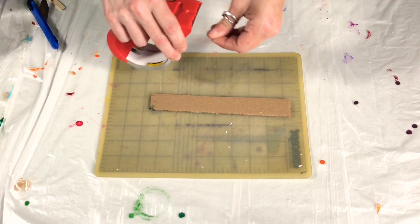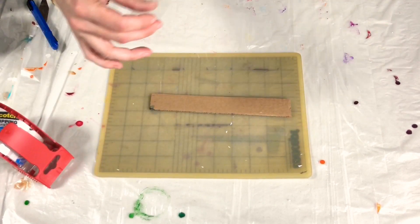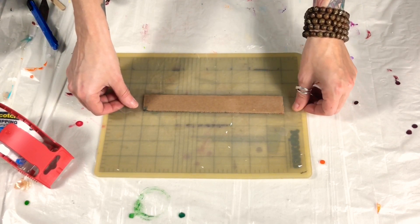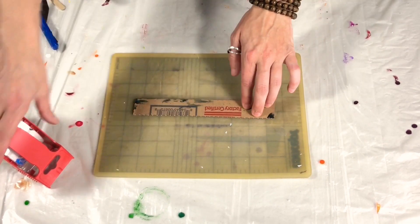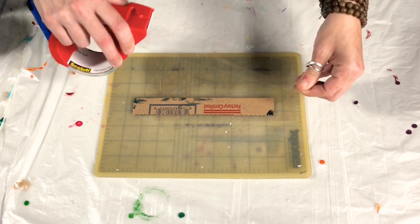So what I do is I just take a piece of shipping tape and I cover one side. Make sure it's pressed down and that it's overlapping so you want it hanging over your cardboard.